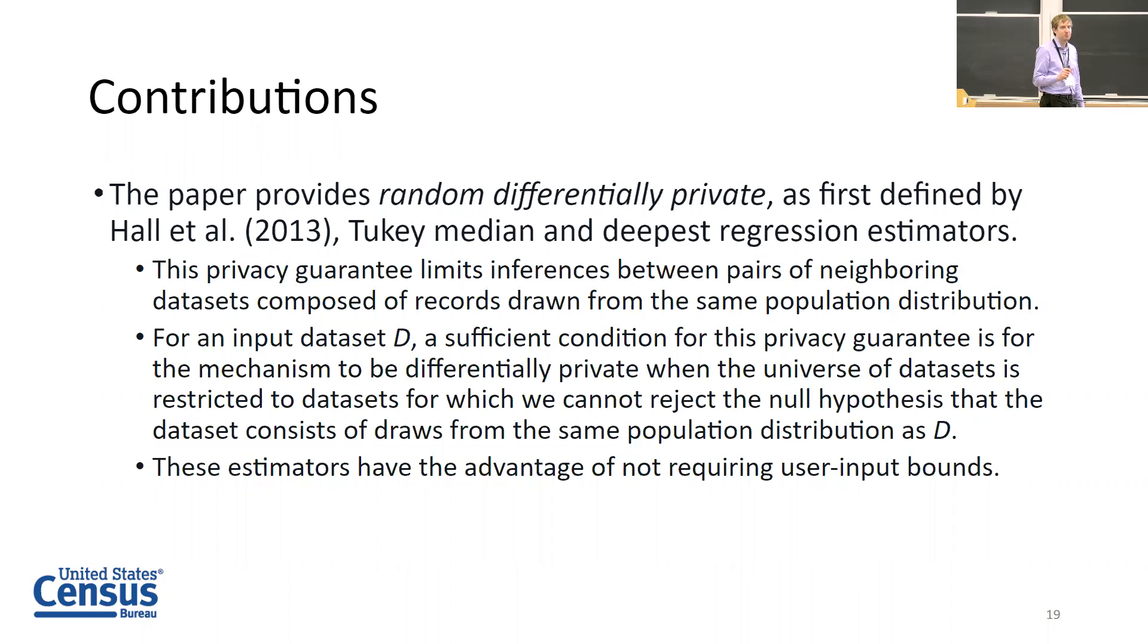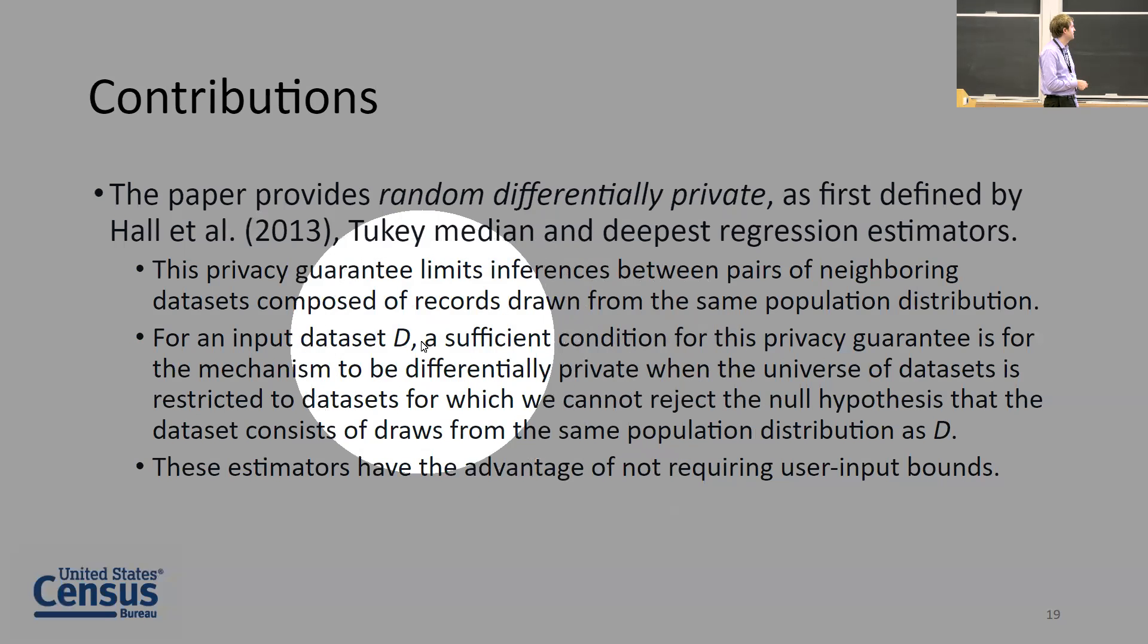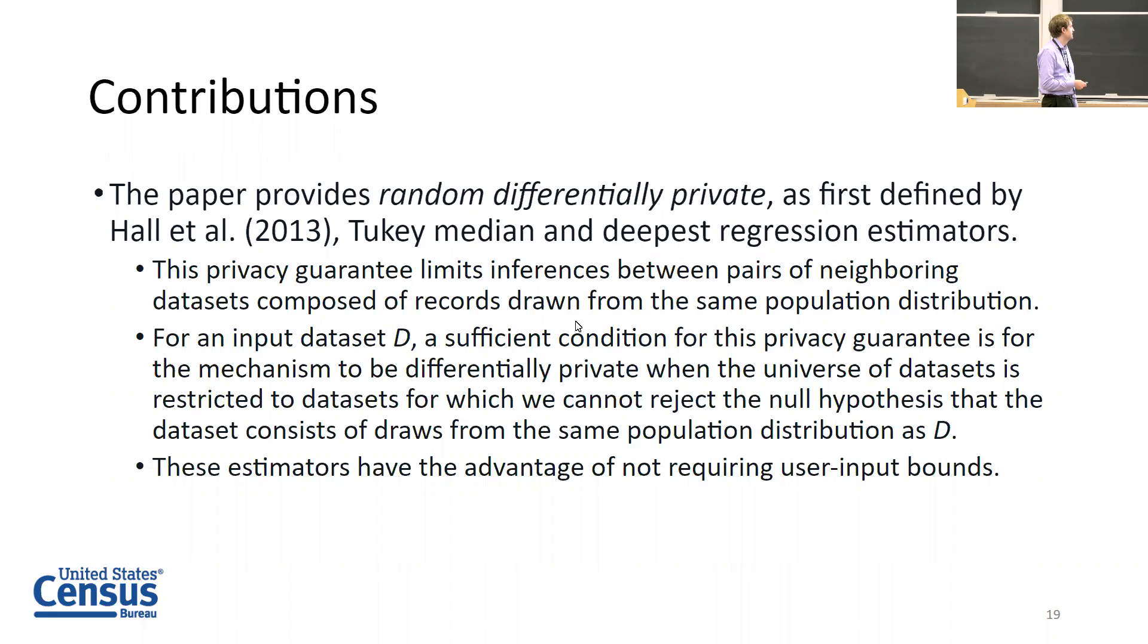The privacy guarantee limits inferences between pairs of neighboring datasets composed of records drawn from the same population distribution. The main assumption is that the records are i.i.d. draws from a population distribution. But we're not assuming anything about the actual population distribution itself - it's non-parametric. There's no parametric assumptions on the population distribution. For an input dataset D, a condition related to the sufficient condition used to prove this in the paper is that it's epsilon-delta for all datasets drawn from the same population distribution.